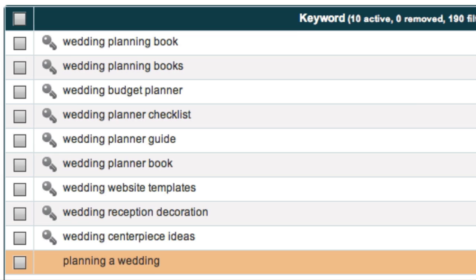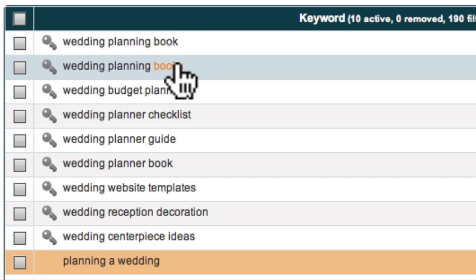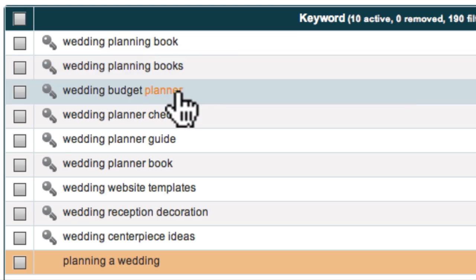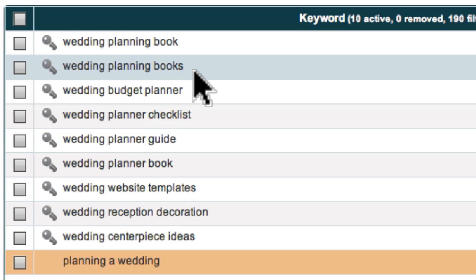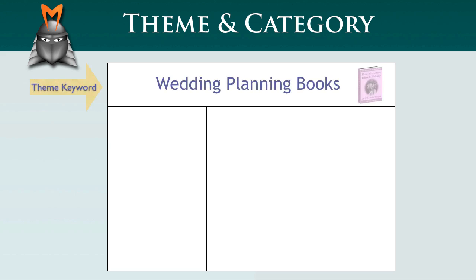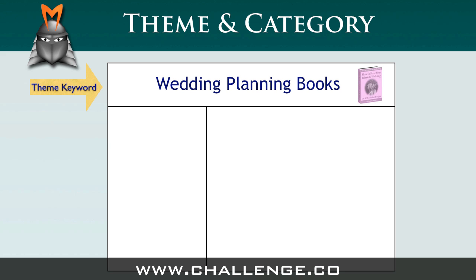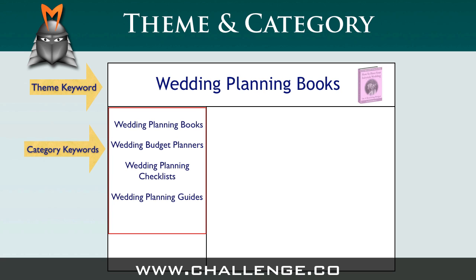To do this, examine each keyword and look for a phrase that gives you a broad scope for creating a website. For example, as I look down through my list, I can see that if I chose Wedding Planning Books as my theme keyword, I could create a site that provides comprehensive reviews of the many wedding planning books available online. Beneath my theme keyword, Wedding Planning Books, I could have category pages optimised for other keywords such as Wedding Budget Planners, Wedding Planning Checklists, and Wedding Planning Guides. This kind of structure maximises our chances of achieving a high ranking in the search engines.